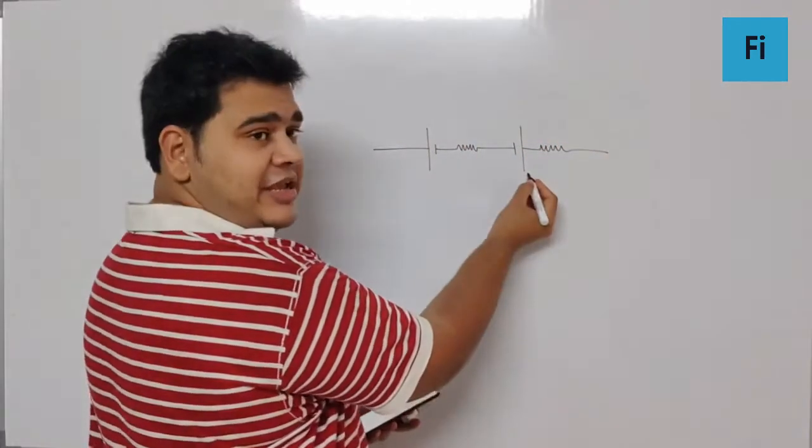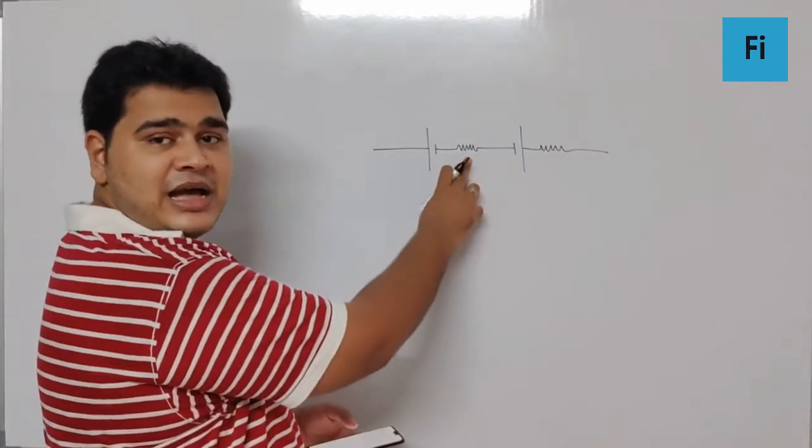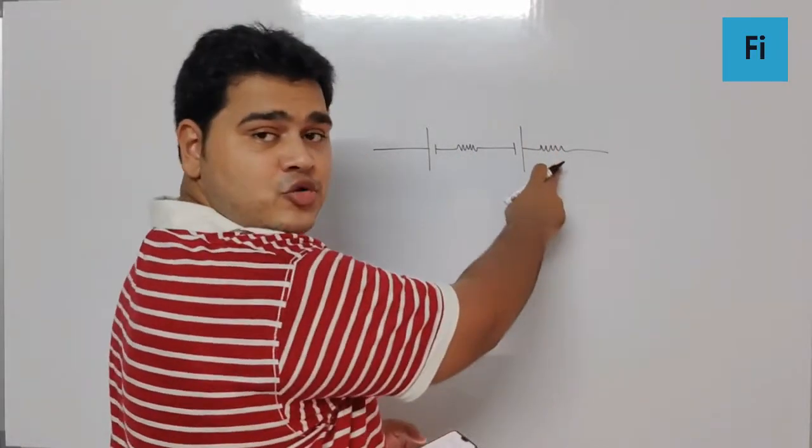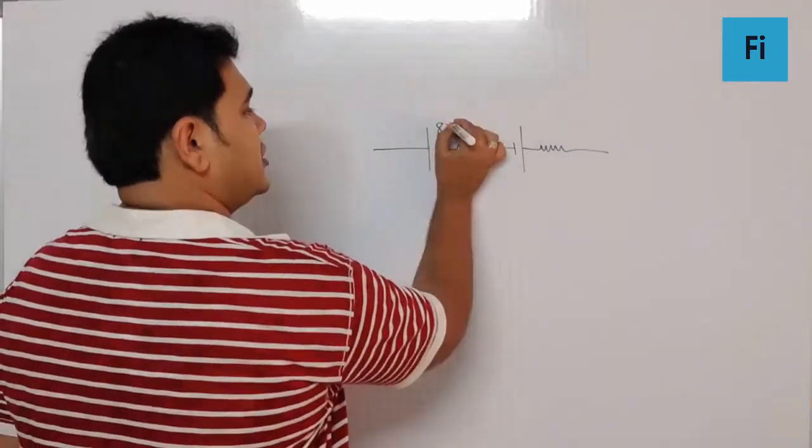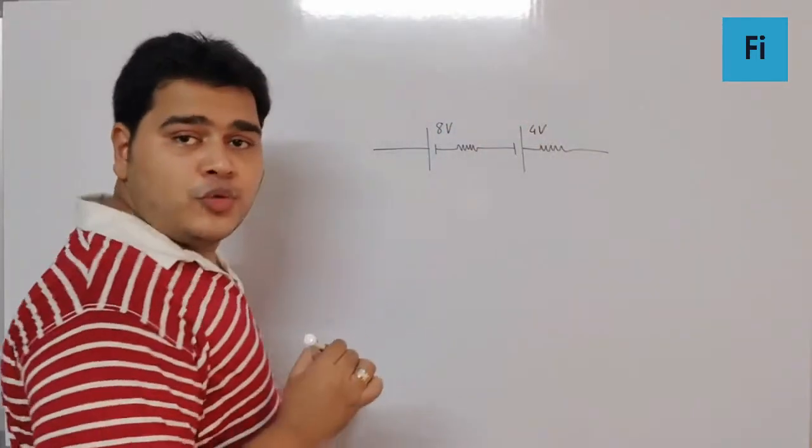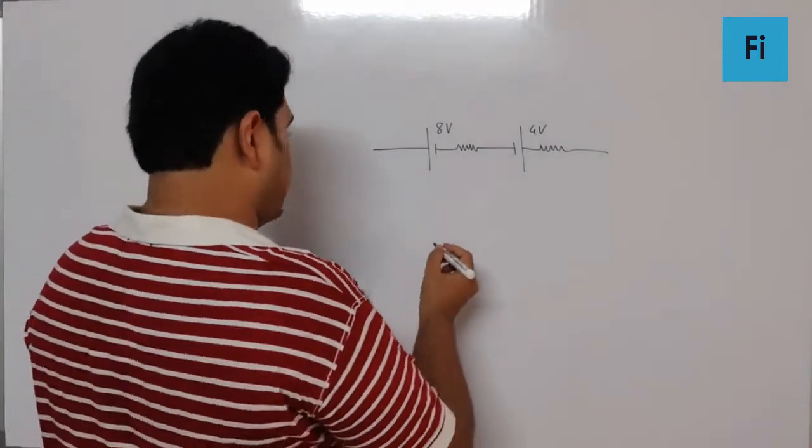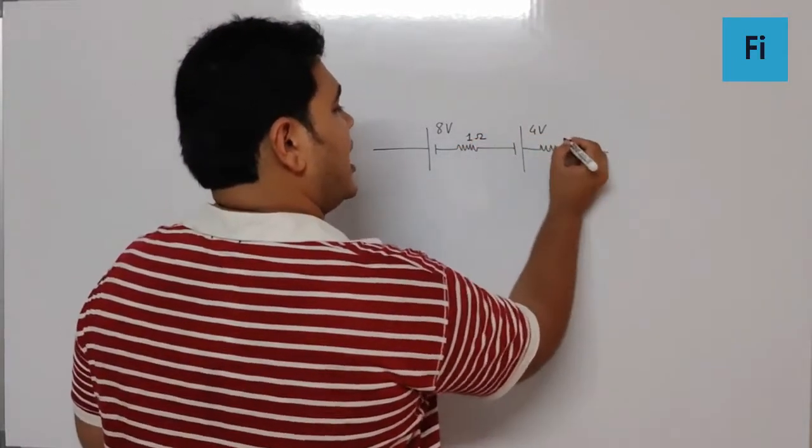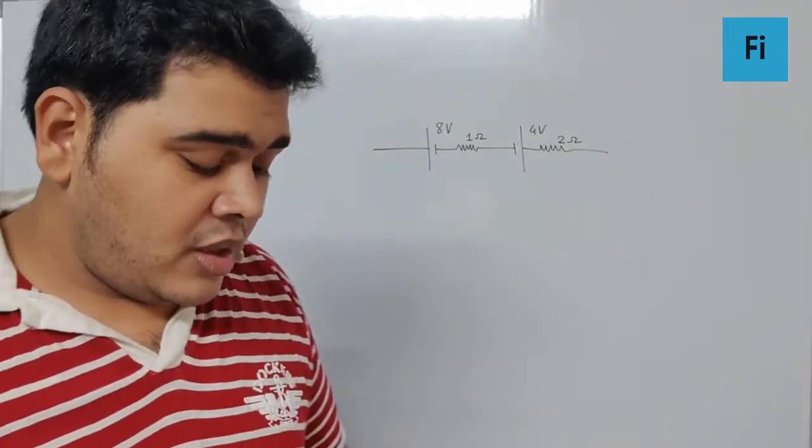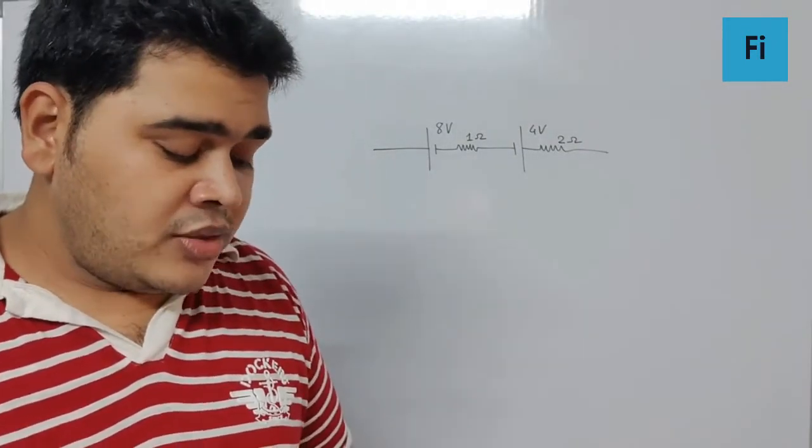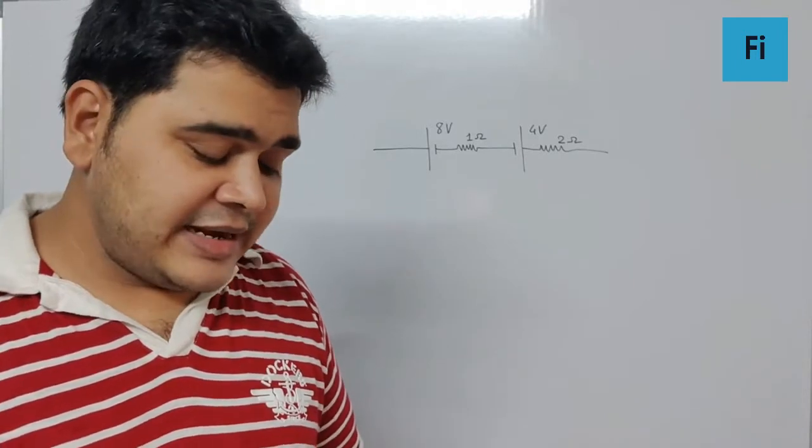This will be E1, this will be E2, this will be internal resistance R1, this will be internal resistance R2. E1 is given as 8 volt, E2 is given as 4 volt, R1 is given as 1 ohm, R2 is given as 2 ohm. This is the data given. Further they say this combination of cells is connected to an external resistance of 5 ohm.